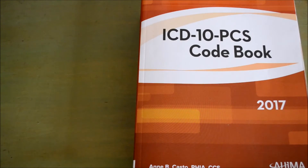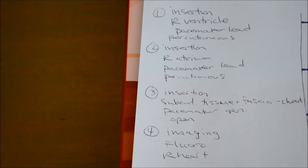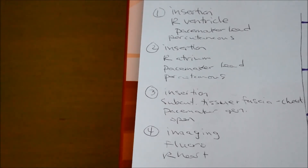Today we are going through the example of the placement of a dual chamber pacemaker. I have the procedure as a guide but I'll just give a quick summary — you can go to the previous video where I read it and dissected the op report to see how I found this information. So now it's time to go into the book and do some PCS coding. These are my notes from our previous video: we found that we need four codes. The first code is the insertion of a pacemaker lead in the right ventricle, with a percutaneous approach.